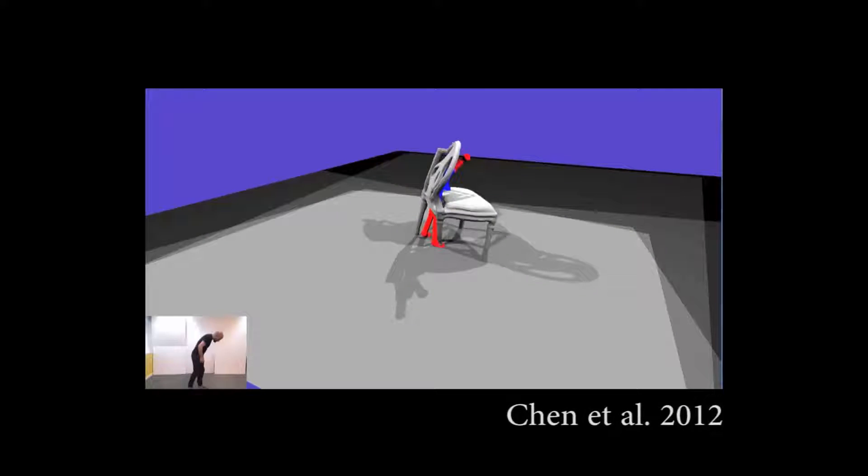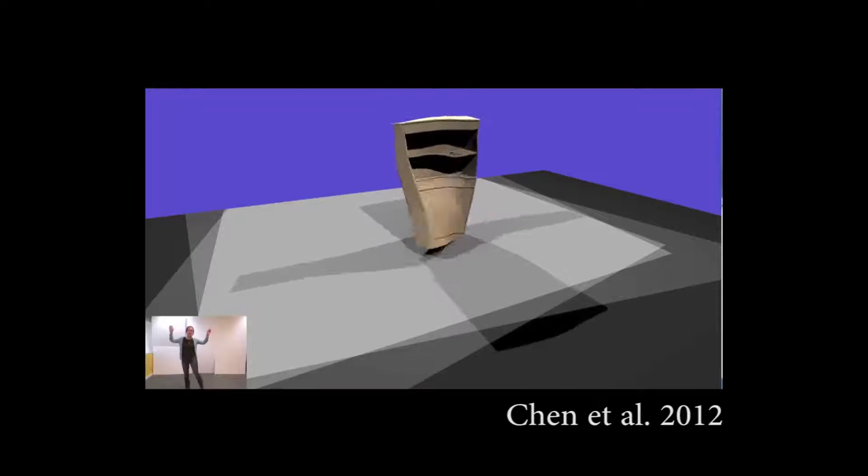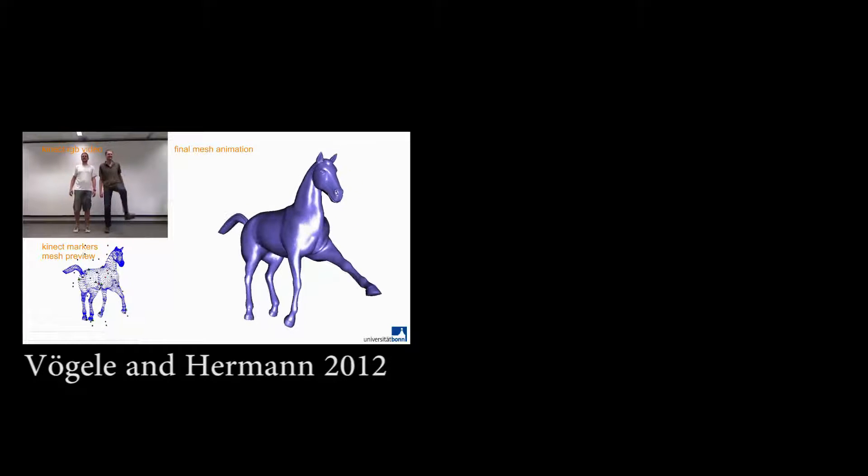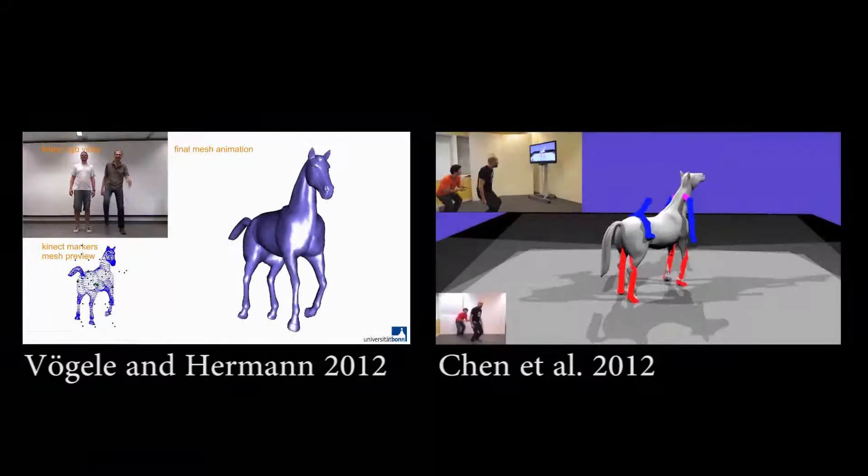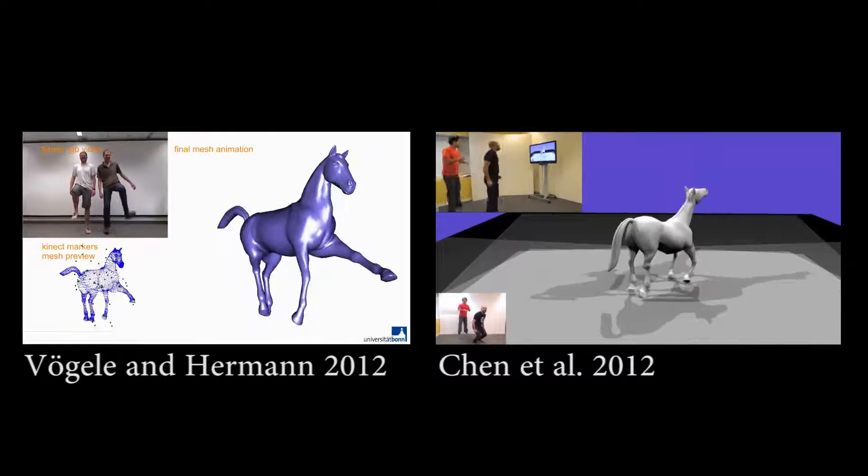Some works build animation controllers for deformable characters. However, this is limited to human-like target shapes as the source motion style maps exactly to the target. It is also possible to map multiple human skeletons to quadrupedal target skeletons such as for this pantomime horse. However, the motion mapping is exact and cannot scale to non-human sub-skeletons.